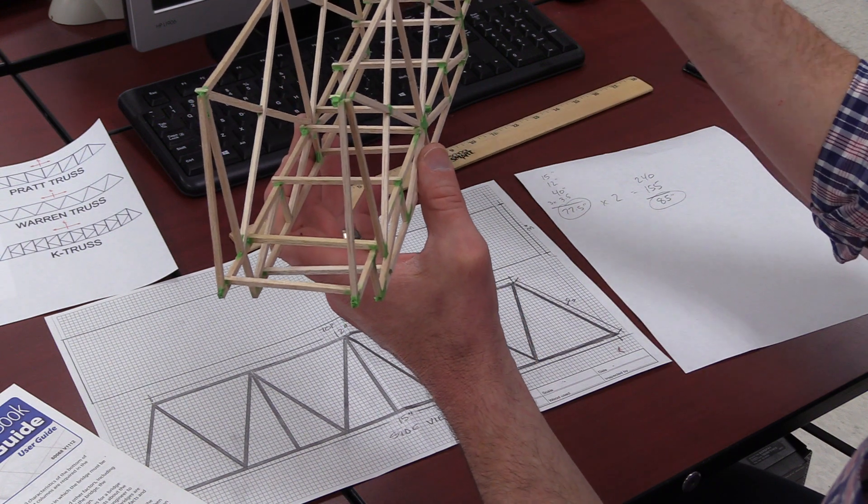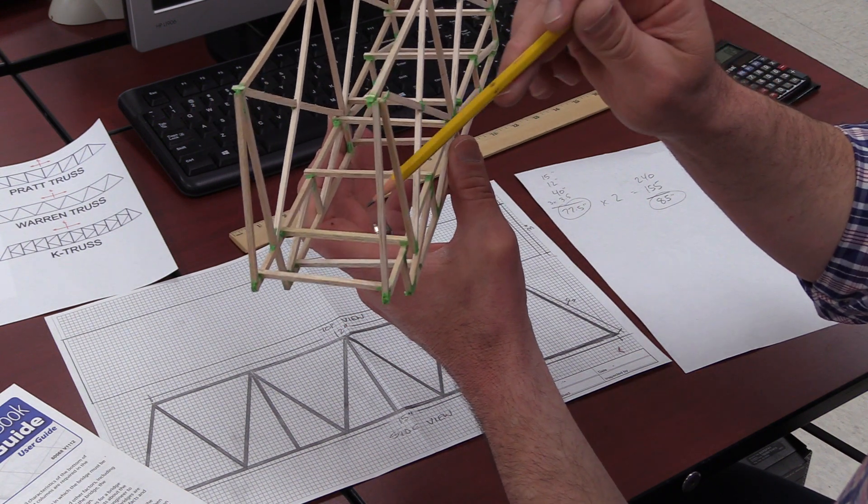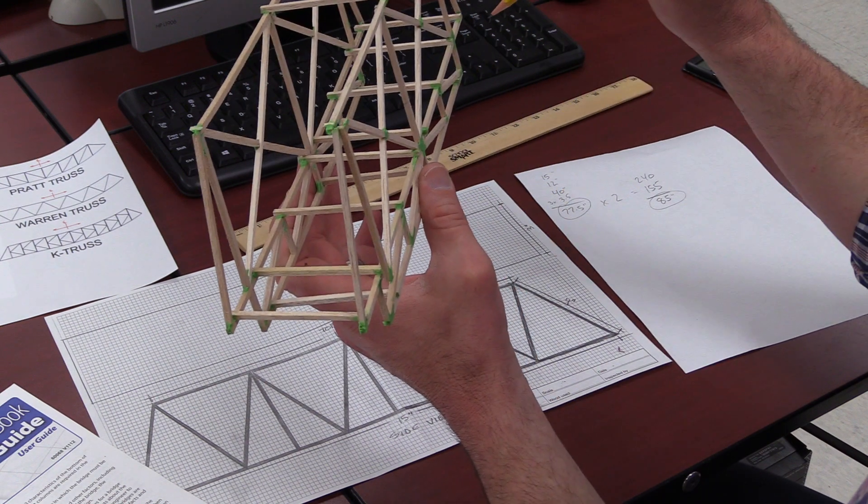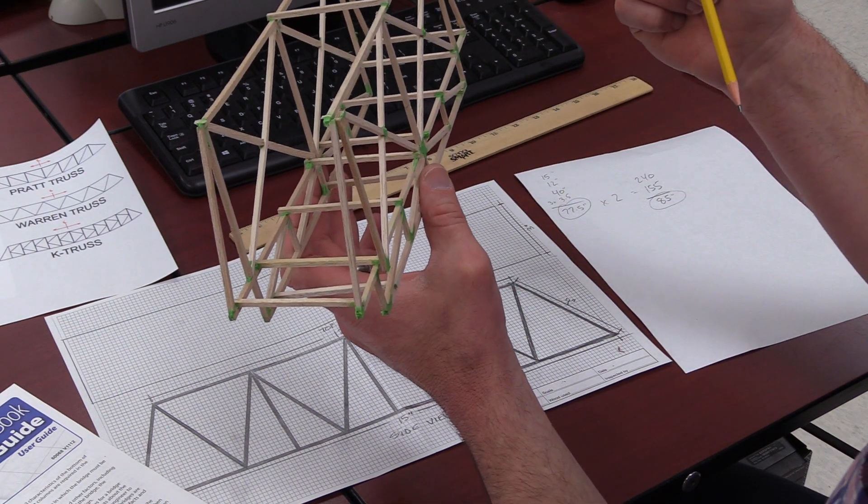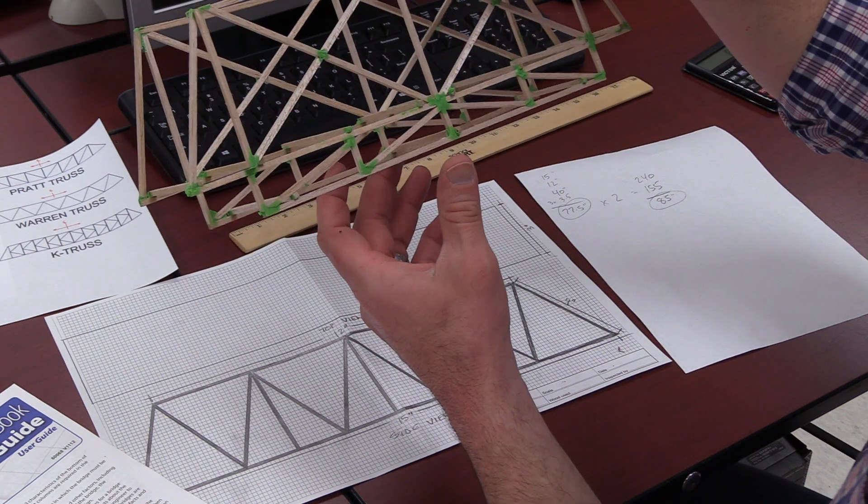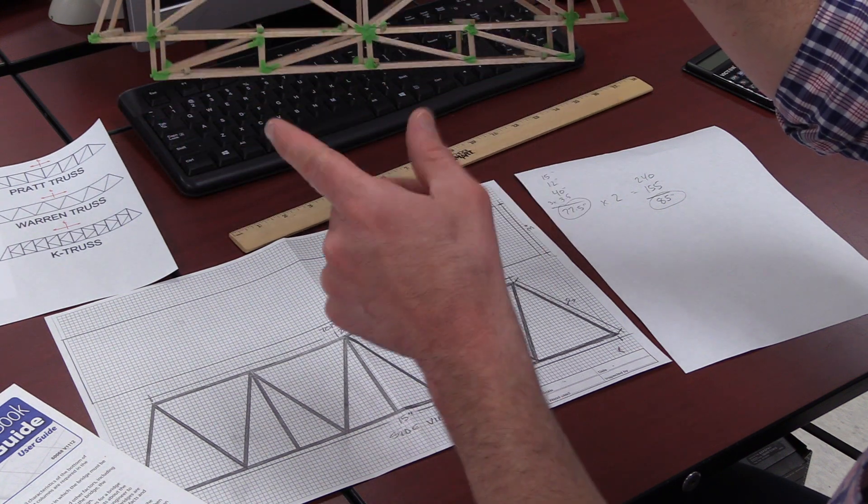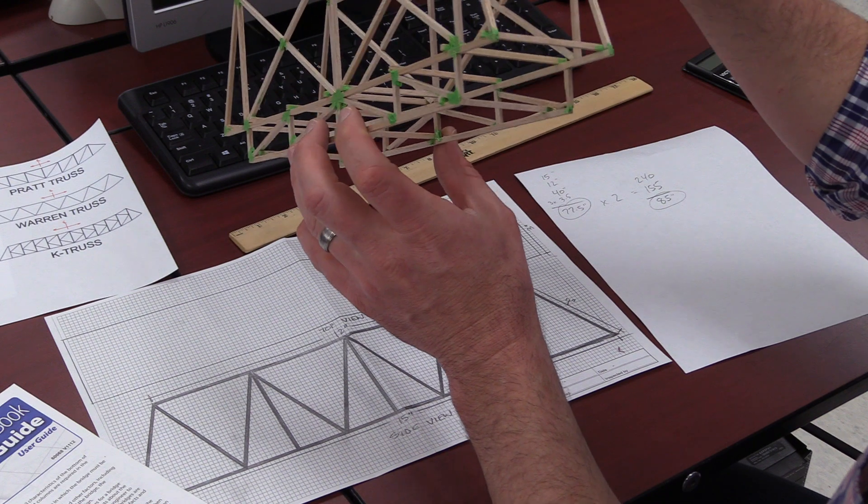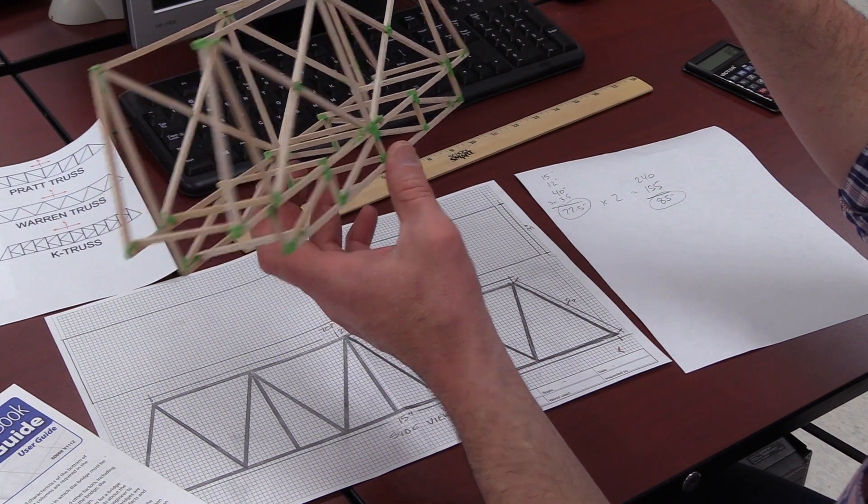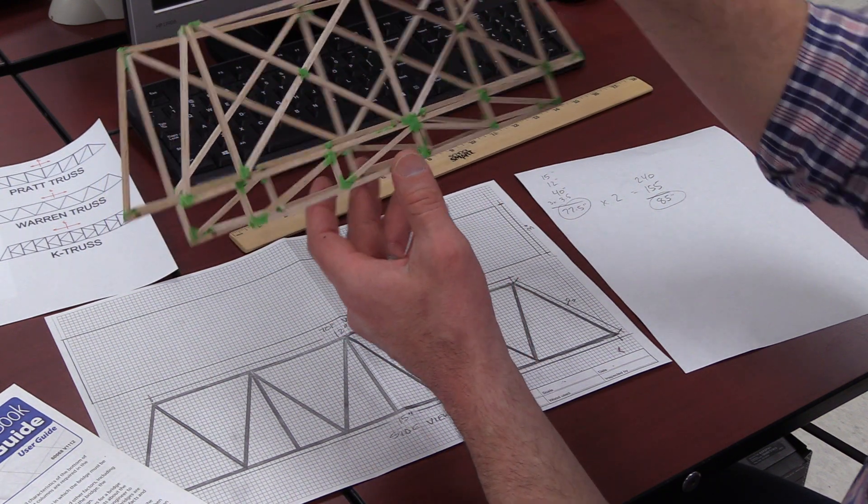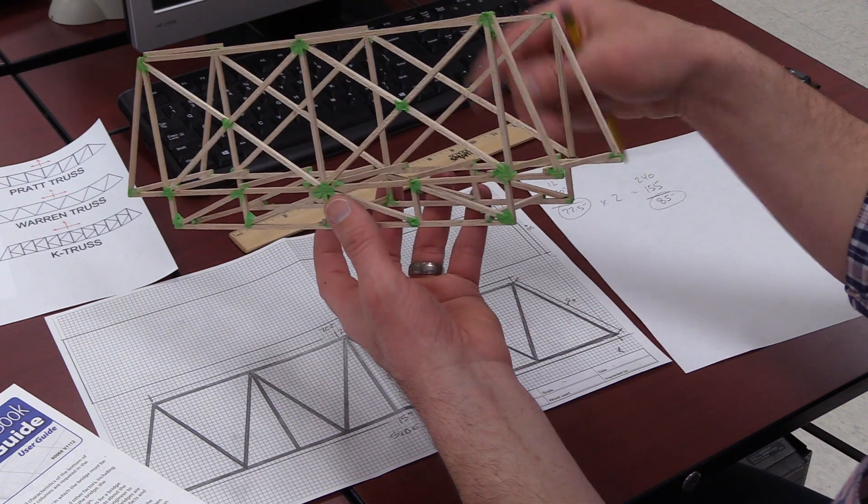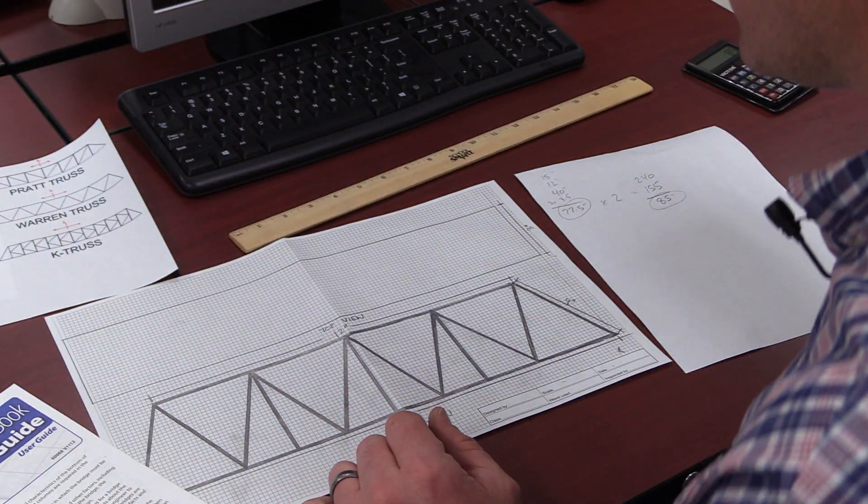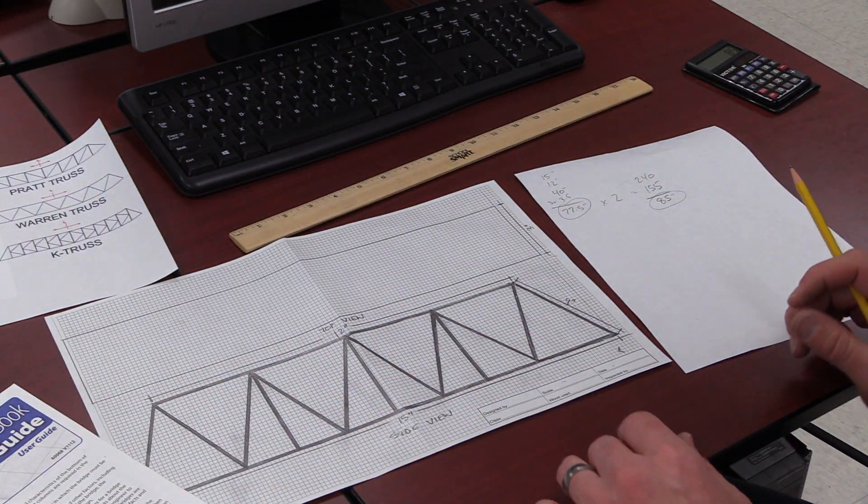And this student had 1, 2, 3, 4, 5, 6, 7, 8 pieces along the roadway. And then this particular one, they did a substructure. And this is kind of a unique design. You definitely have the option of doing something like that.